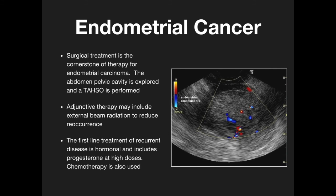Surgical treatment is a cornerstone for endometrial carcinoma. The abdominal and pelvic cavity is explored, and a total abdominal hysterectomy with bilateral salpingo-oophorectomy is performed. Adjunct therapy may include external beam radiation to reduce recurrence. The first-line treatment for recurrent disease is hormonal, including high-dose progesterone. Chemotherapy can also be used.